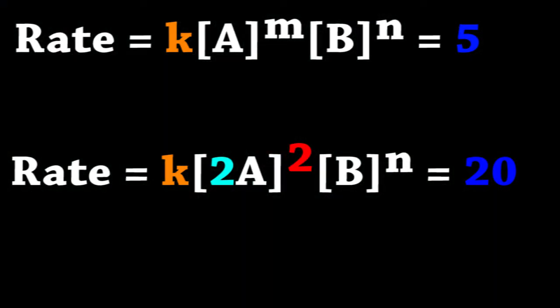We know this because we've gone from 5 to 20, which is a fourfold increase, even though we only increase the concentration of A by 2. That means that the concentration of A must affect the rate in a squared manner, because 2 squared becomes 4, which is our increase from 5 to 20.